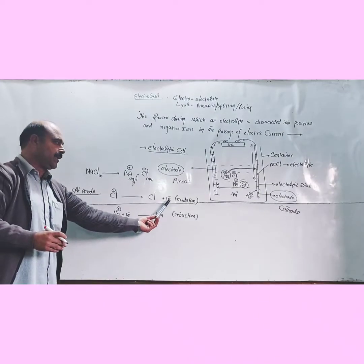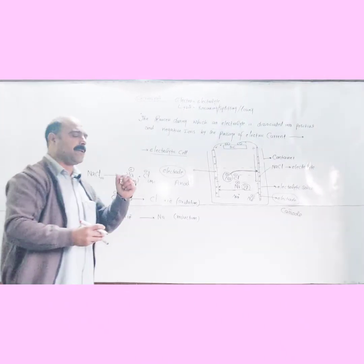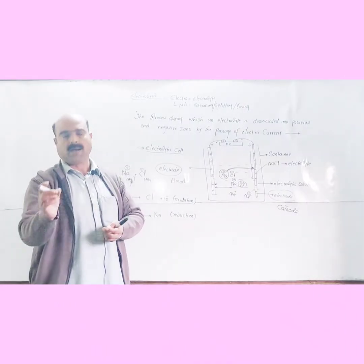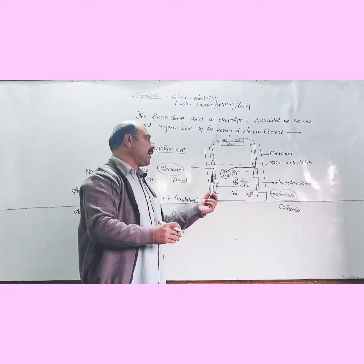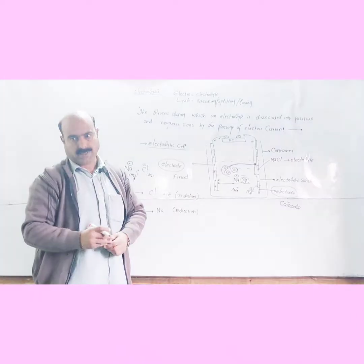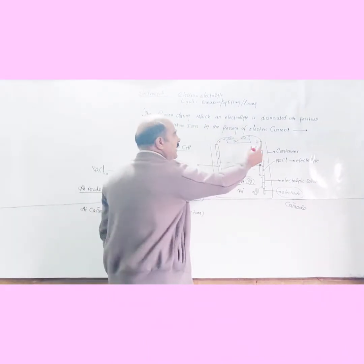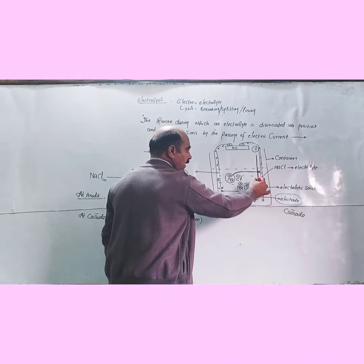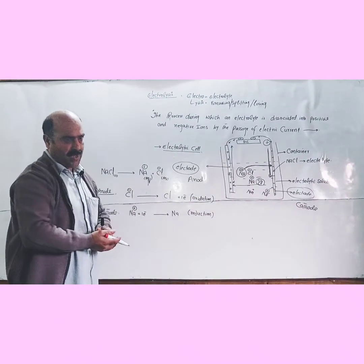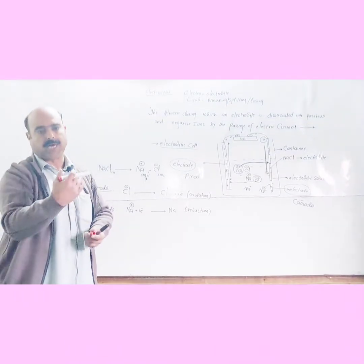At the anode, electrons are released (oxidation), and at the cathode, elements are deposited (reduction). Electrodes are metallic plates, wires, or rods through which electrons leave the electrolyte (at the anode) and enter the electrolytic solution (at the cathode).